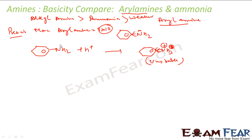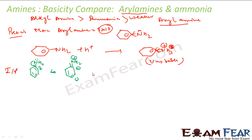Let me draw the resonating structures of the input. For the input I have NH2 on a benzene ring. The lone pair moves into the ring, giving a double bond and NH2 with a positive charge and a negative charge elsewhere. Continuing, this bond moves again giving another structure with NH2+ and a negative charge at another position.